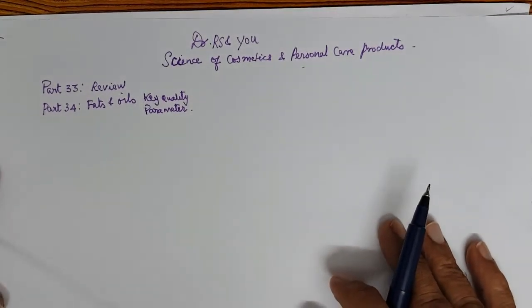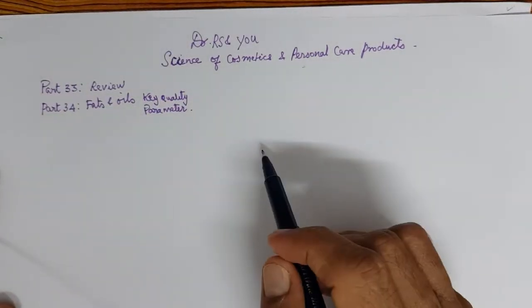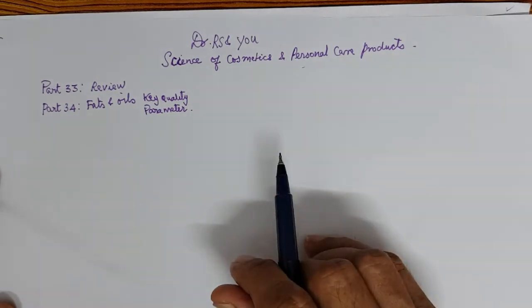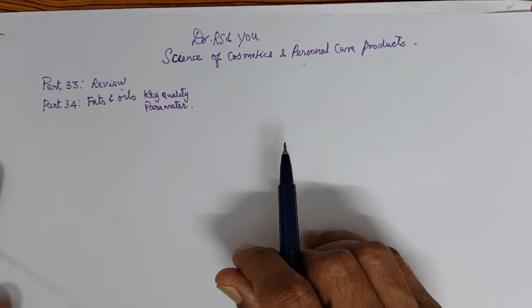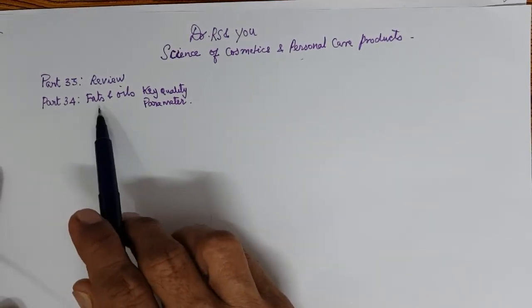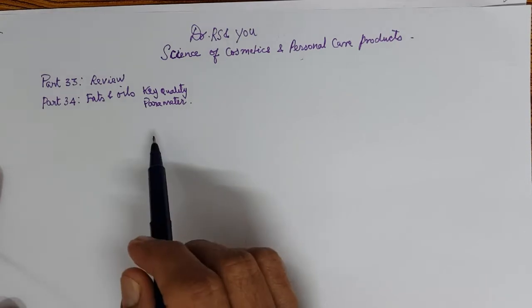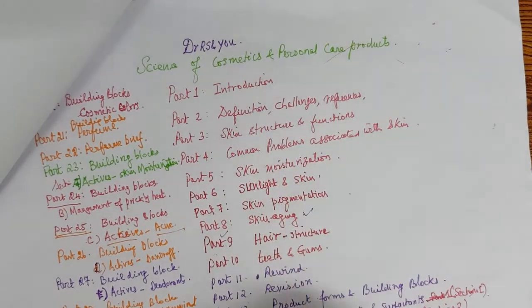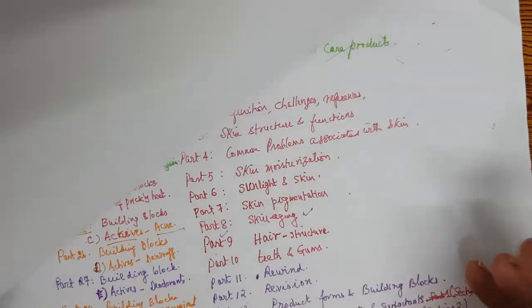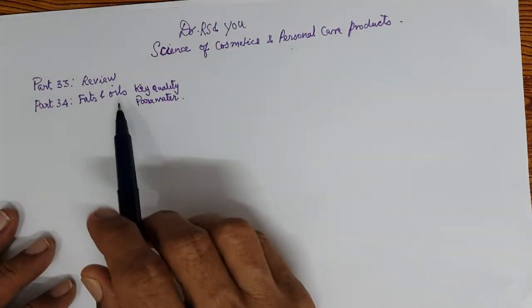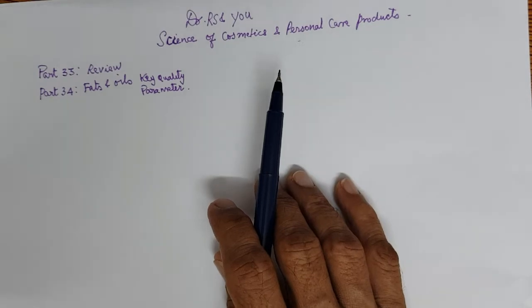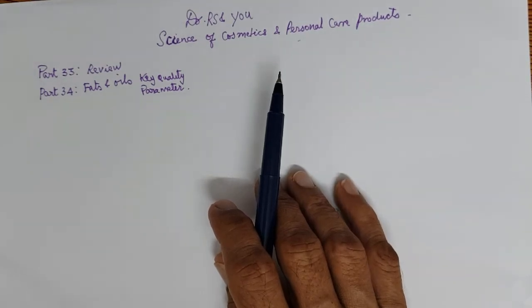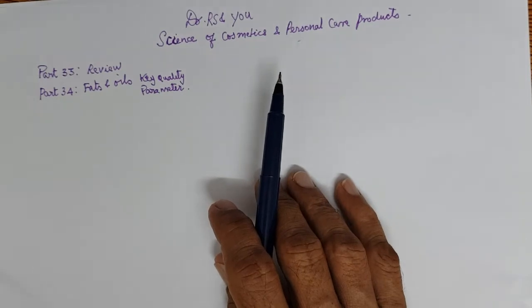Welcome all for another video on Dr. R.S. & U, Science of Cosmetics and Personal Care Products. Today we will be discussing Part 34, fats and oils, key quality parameters. We have seen 32 parts covering all the various aspects of the science. Part 33 was a review recollecting all the things covered and a brief on what we are going to cover. Please go and look into Part 33 also.